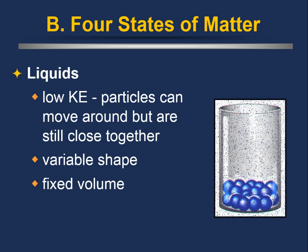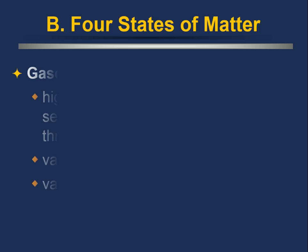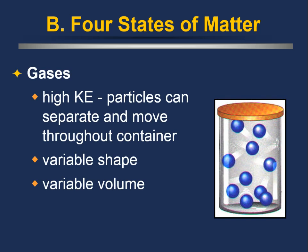Liquids still have a fixed volume, but their shape can change — they take the shape of whatever container they're in. They still have a fairly low kinetic energy, but the particles can now move around. They still stay in close contact with one another, which is why the volume is fixed, but because they can move around, they don't have to stay around a fixed point as in a solid, so they can change their shape.